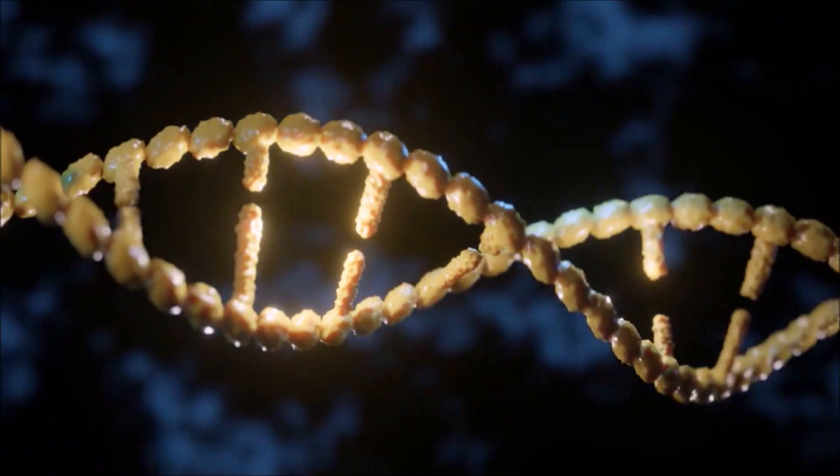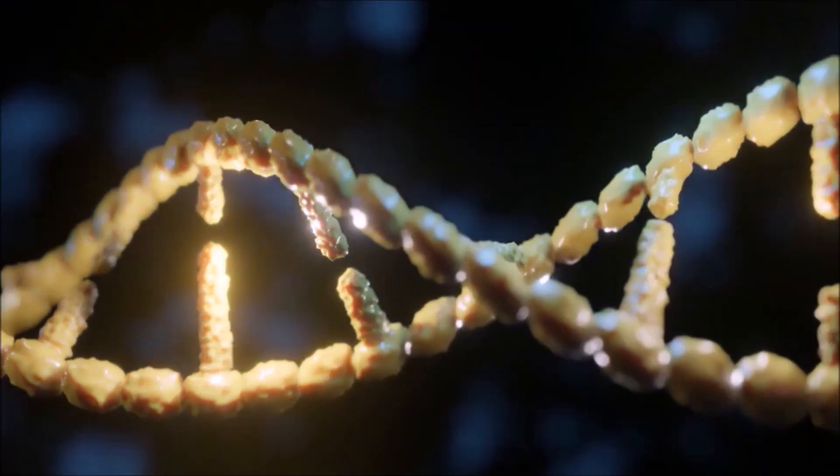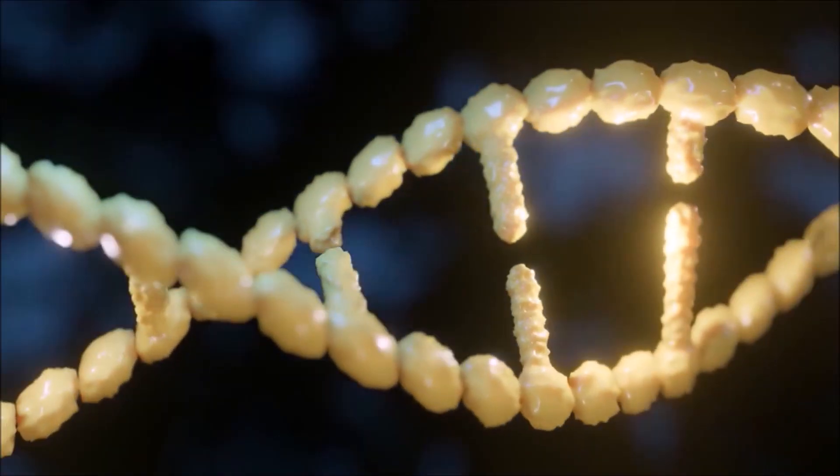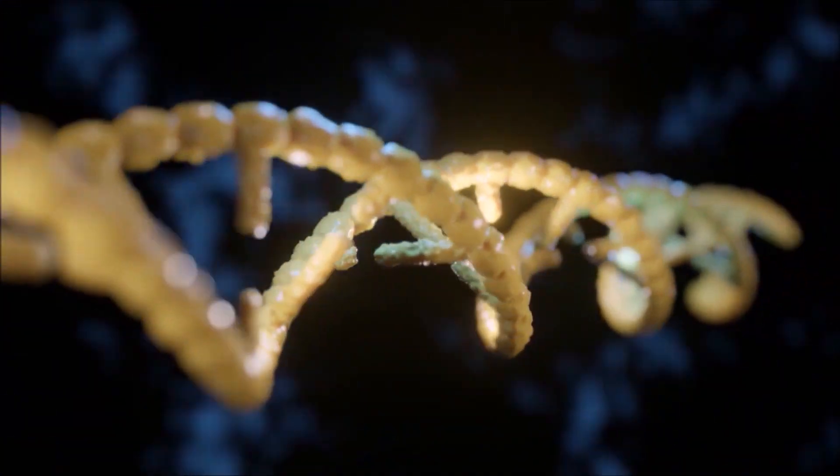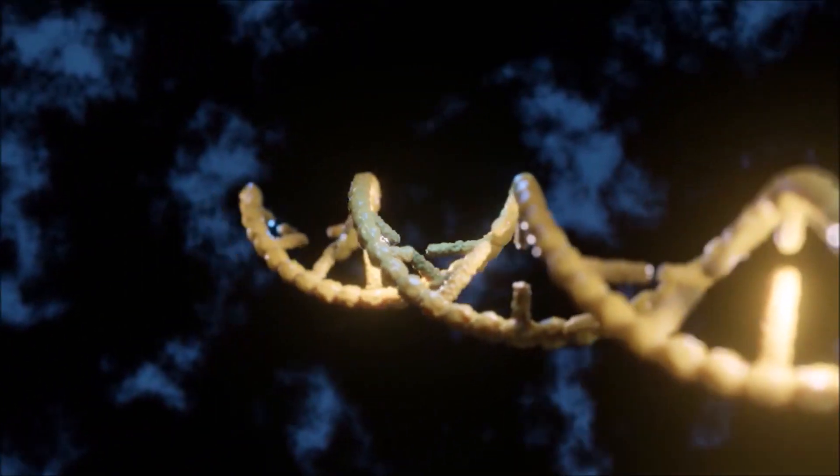The number of chromosomes present in an organism also helps to distinguish them from different species. As mentioned before, humans have 46 individual chromosomes that are arranged into 23 pairs.